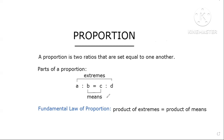Now why is it important to identify these parts? Because we have the fundamental law of proportion, which states that the product of the extremes is equal to the product of the means. We are going to use this formula to identify whether two ratios are proportional.